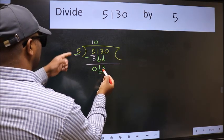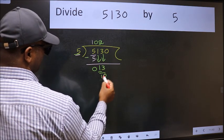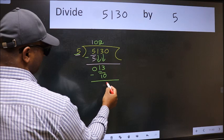A number close to 13 in the 5 table is 5 times 2, 10. Now we subtract. We get 3.